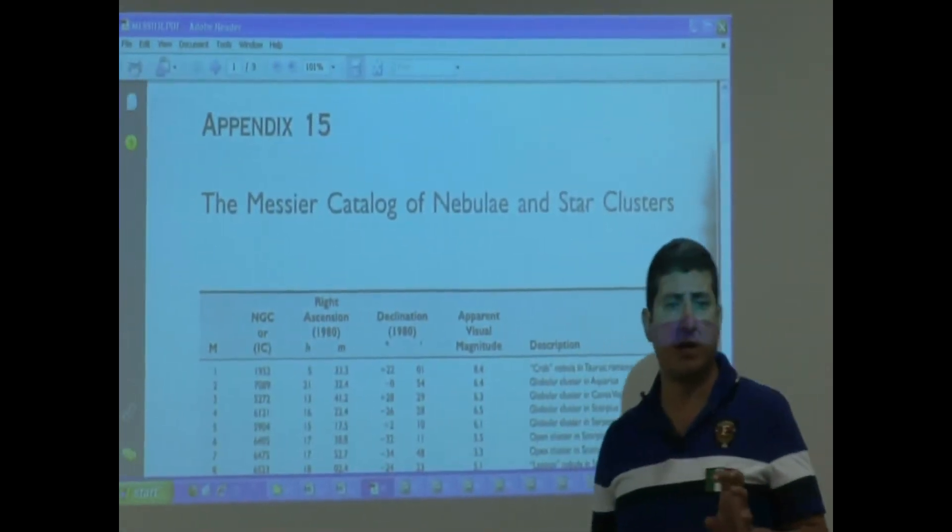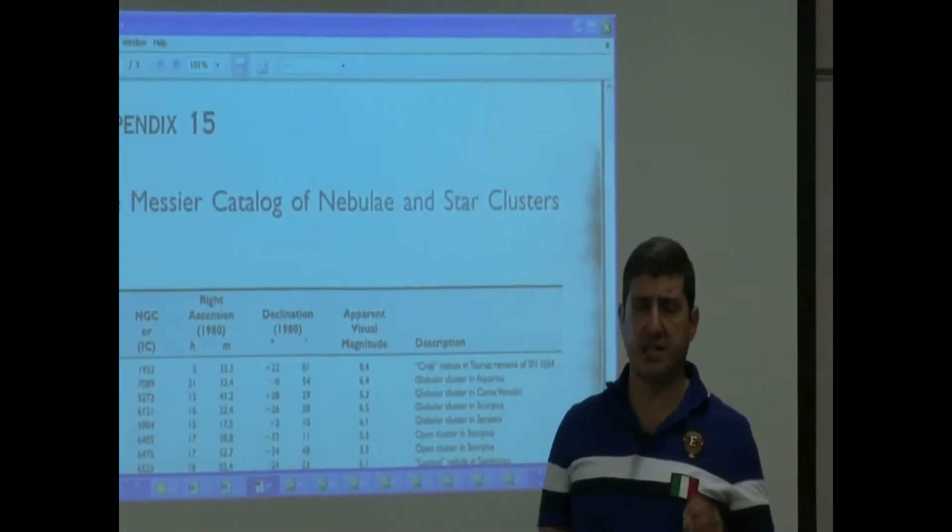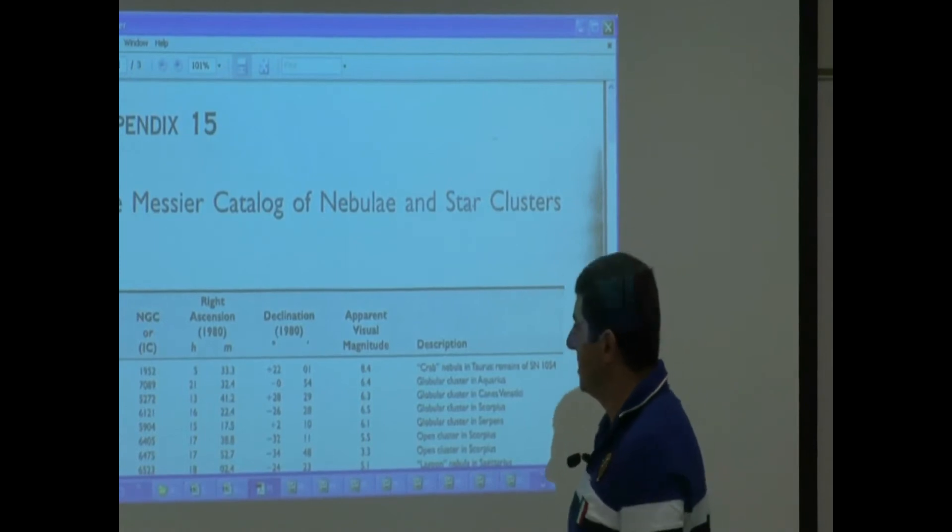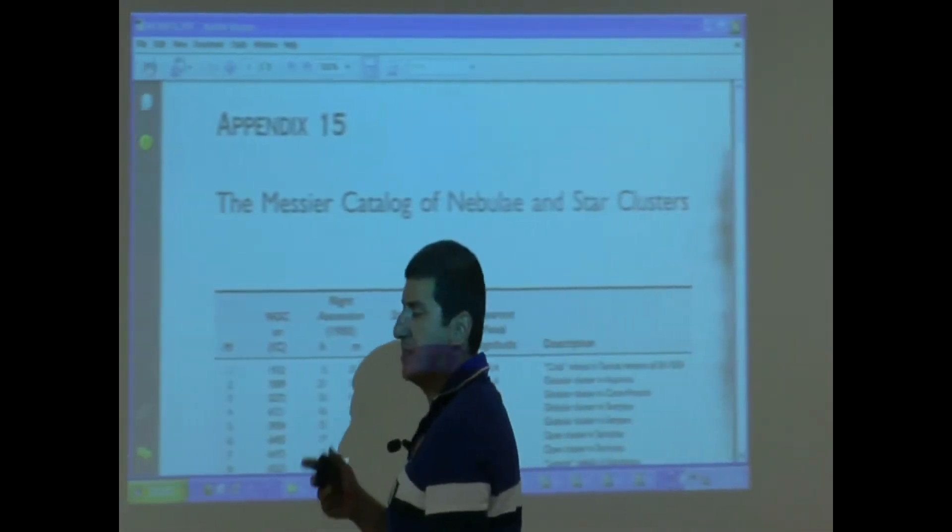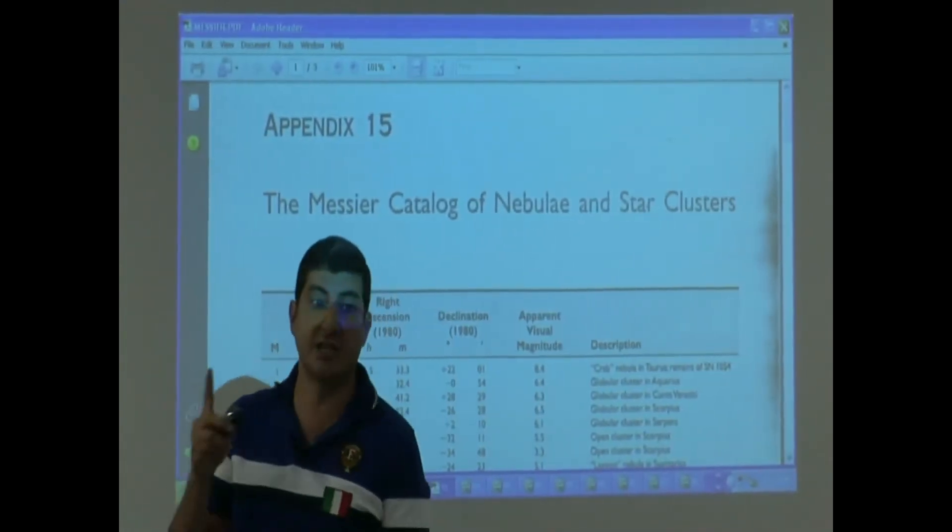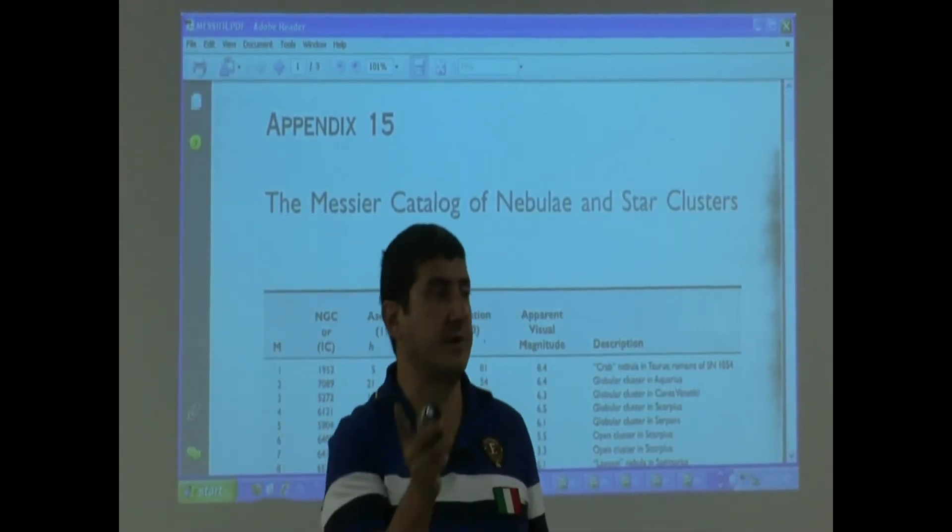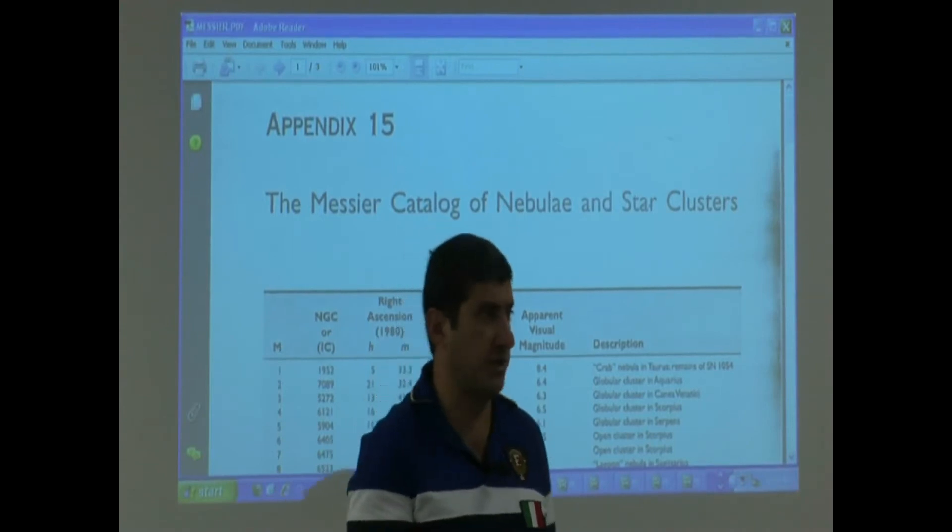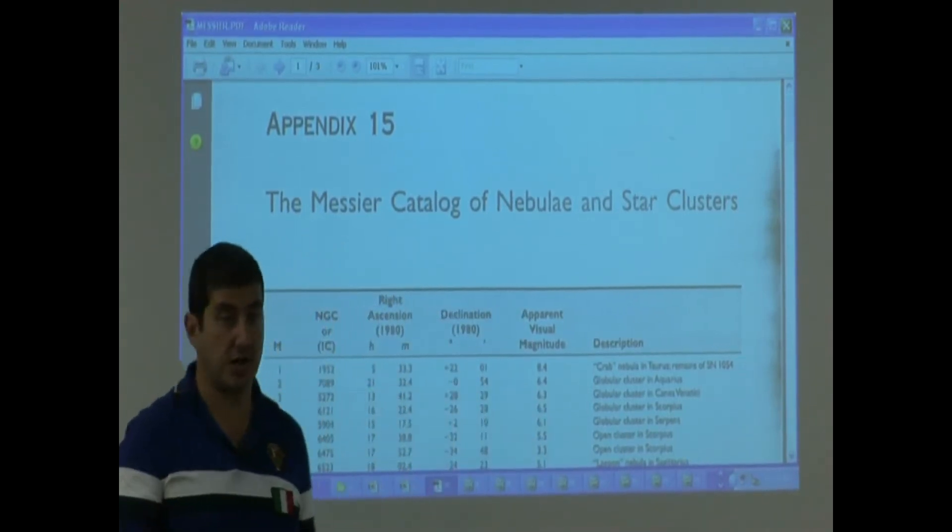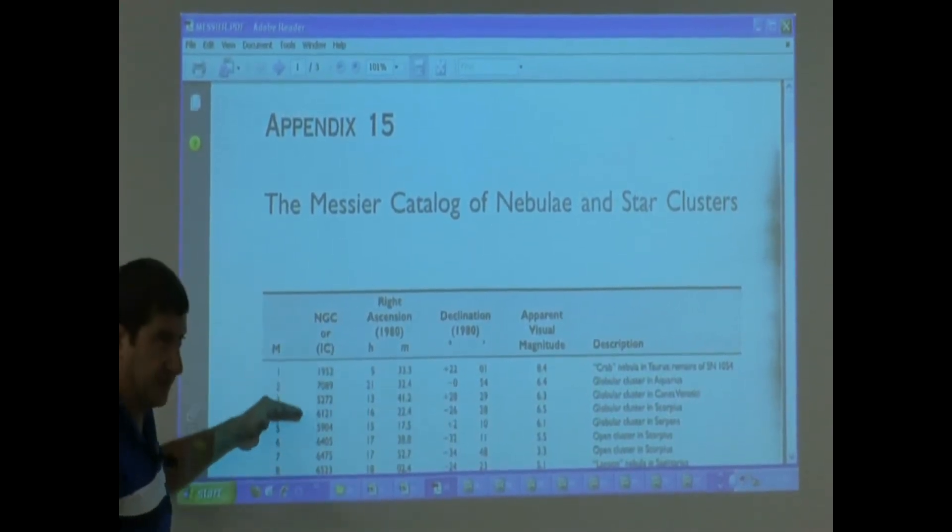Charles Messier studied these objects in the sky in the 1780s. Basically he wanted to make a list of objects in the sky that are not single stars. Any object that is visible from a standard telescope, a good telescope, that is not a single star. And he made a list of them.